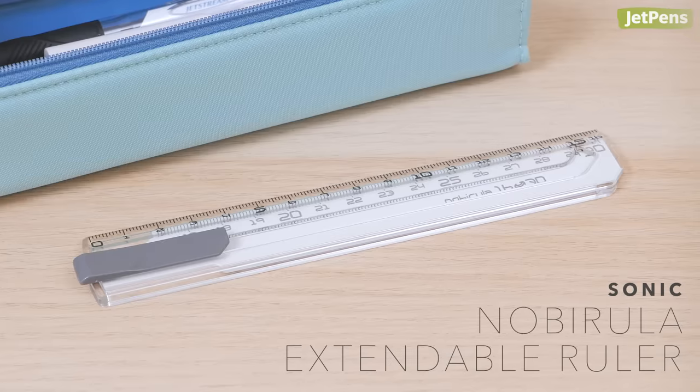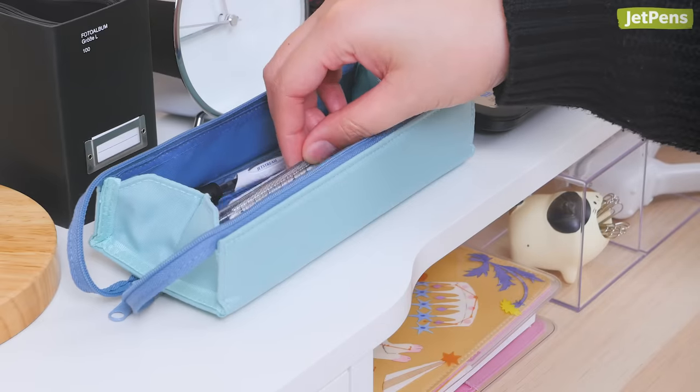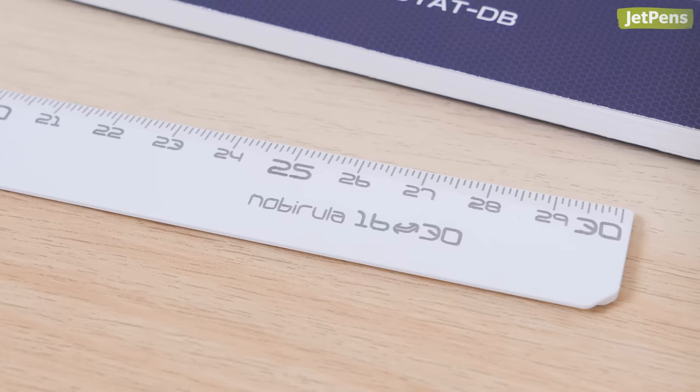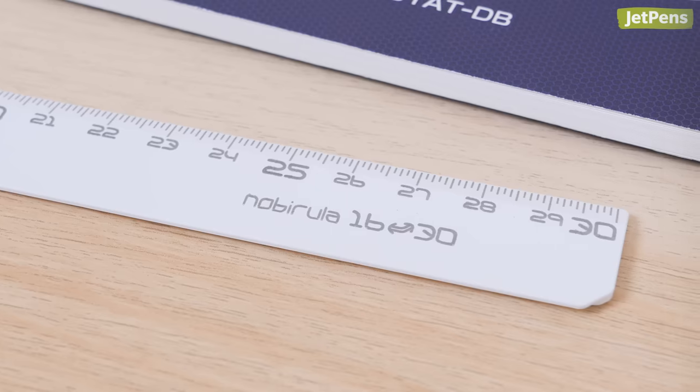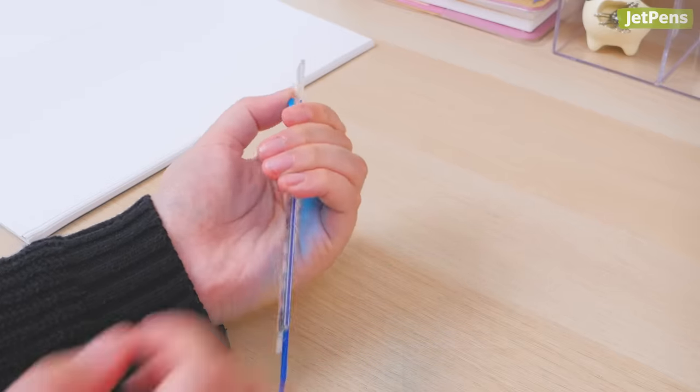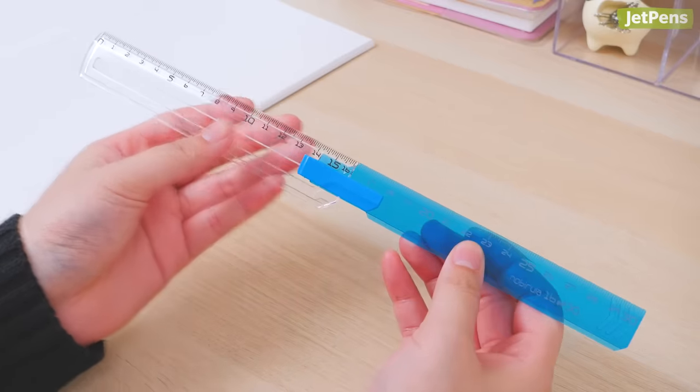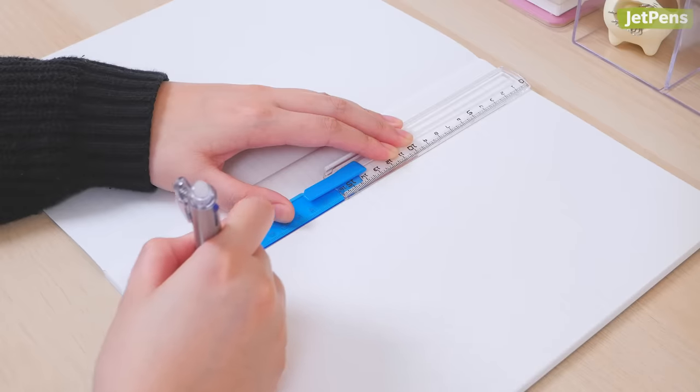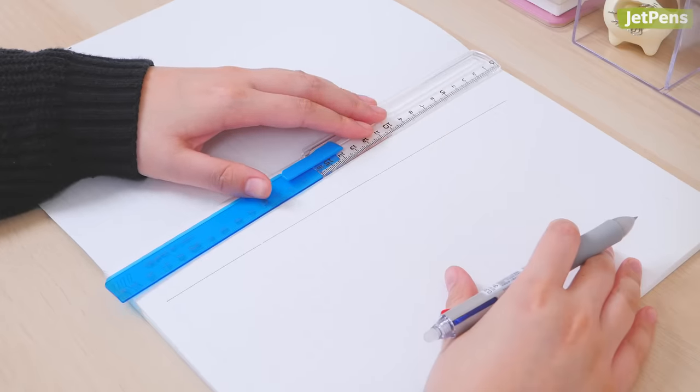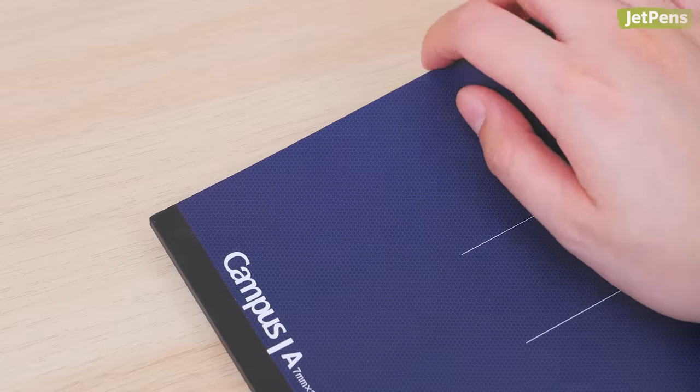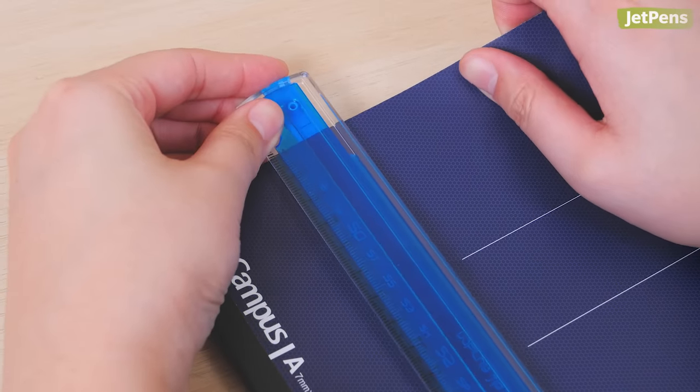Check out these extending rulers from Sonic. The compact Nobiruda ruler fits easily in pen cases at 16 centimeters, but fully extends to 30 centimeters. To extend the ruler, just hold the clip and slide the colored section until it snaps into place. Once extended, it's long enough to draw straight vertical lines down an A4 size page. When you're done with it, you can attach the clip to a notebook for easy access.